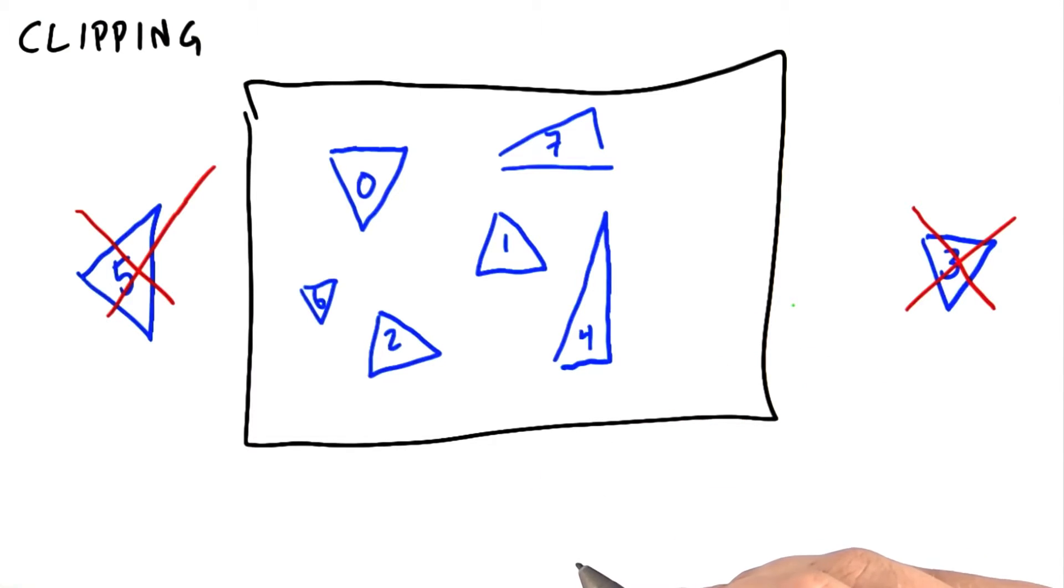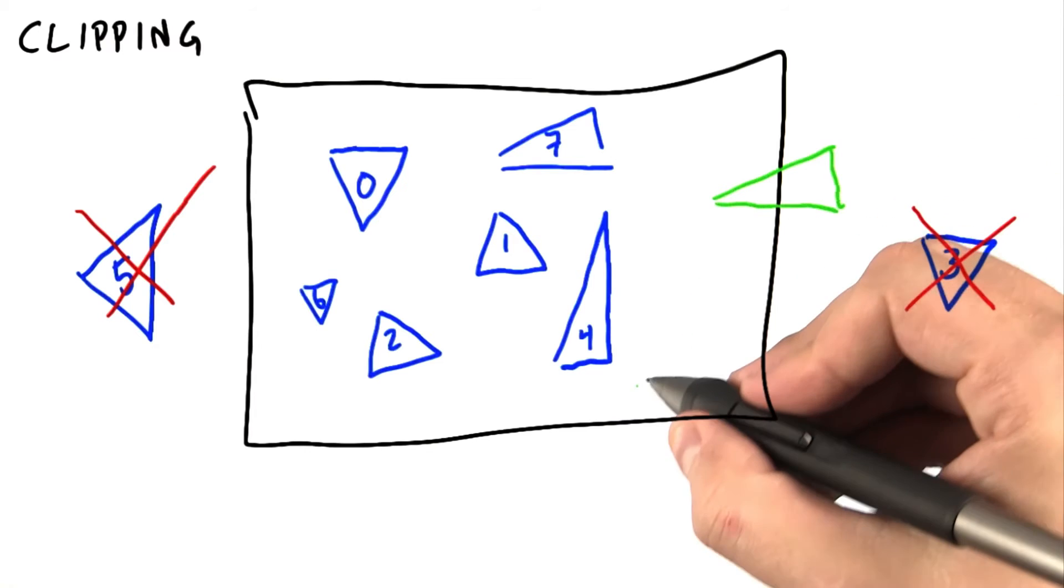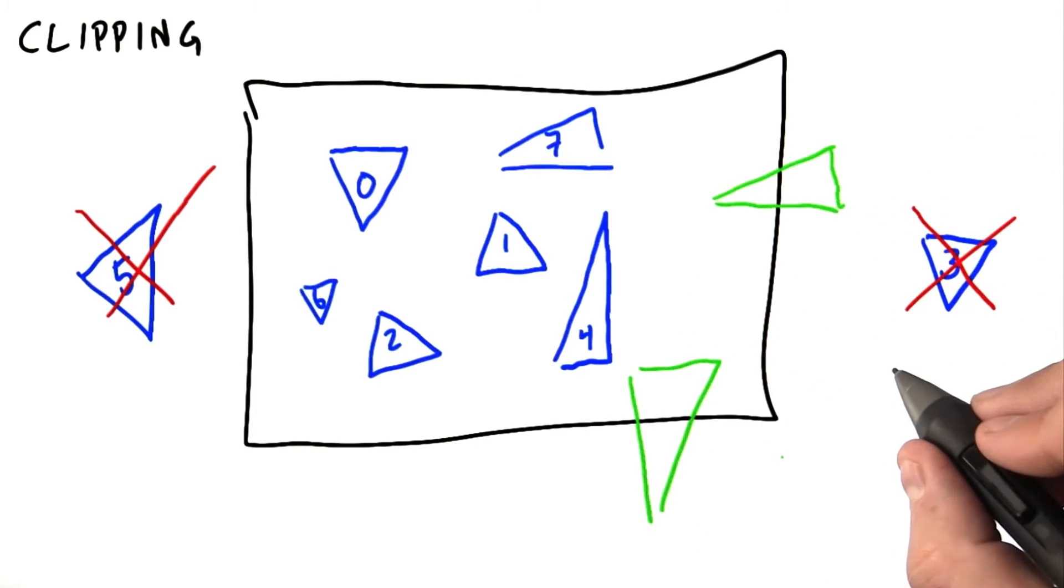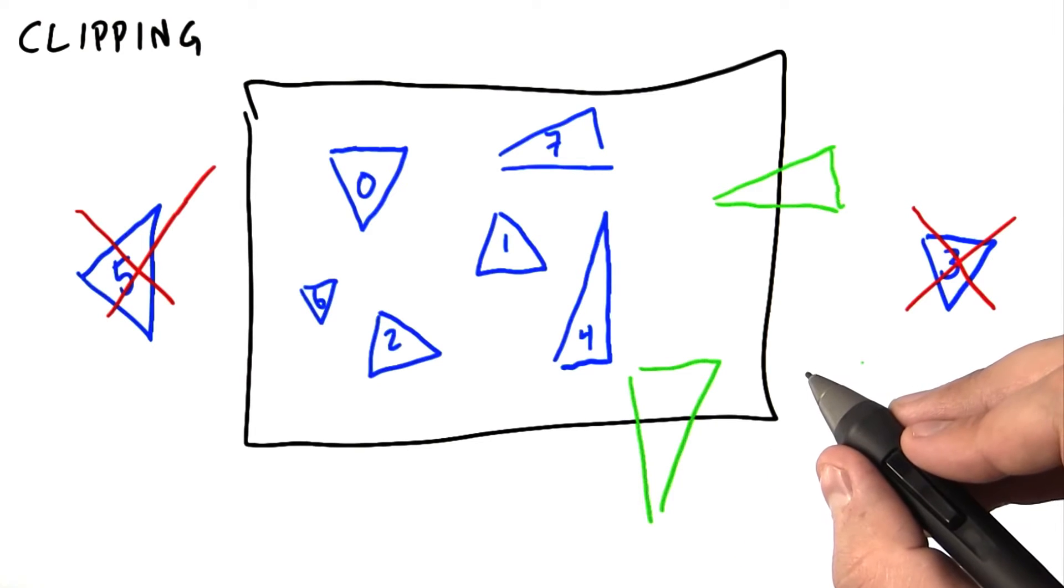What if a triangle intersects the boundary of the screen or window? For example, this triangle here or this triangle here. In this case, we apply an operation called clipping, where we cut the triangle with the boundary and then triangulate the resulting shape.